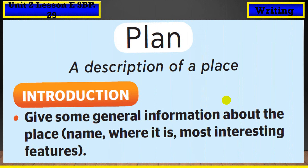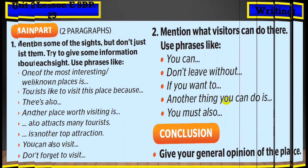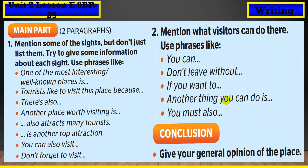For writing a description of a place, in the introduction give general information: the name, where it is, and its most interesting feature. The main part consists of two paragraphs. Paragraph one: mention some sites — don't just list them, give information about each one. You can use phrases like 'one of the most interesting' or 'another place worth visiting is'. Paragraph two: what visitors can do, using phrases like 'you can', 'don't leave without', 'if you want to', 'you must also'.